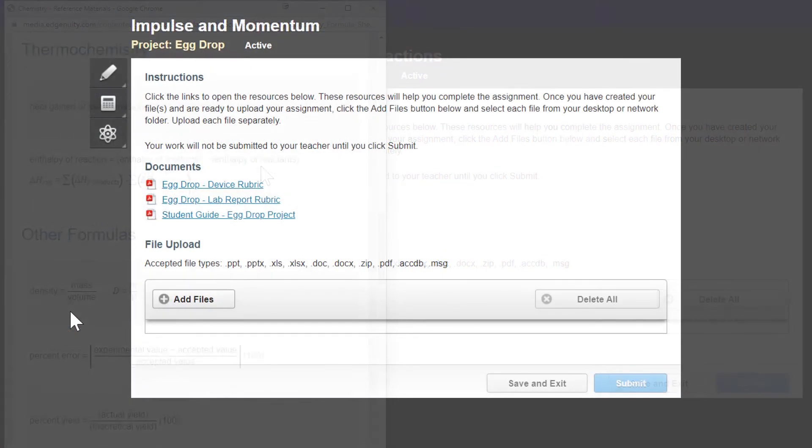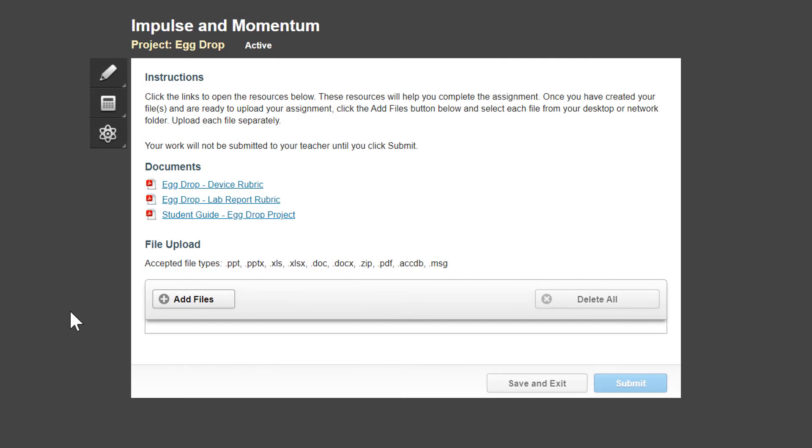Now for our last featured lesson. The Time for Learning Science courses include engaging projects like this egg drop project in physics. Here, students will design a device to protect an egg on impact.